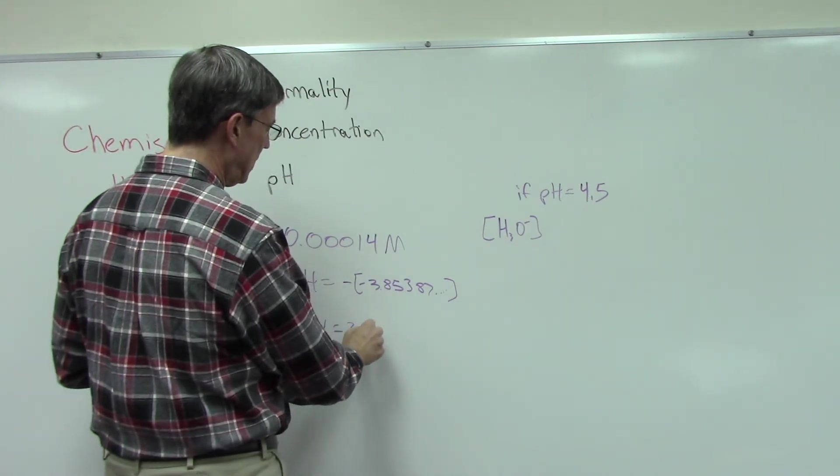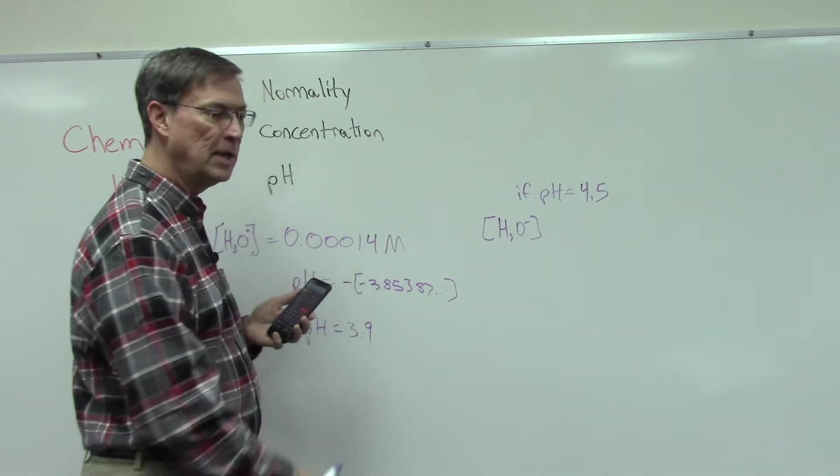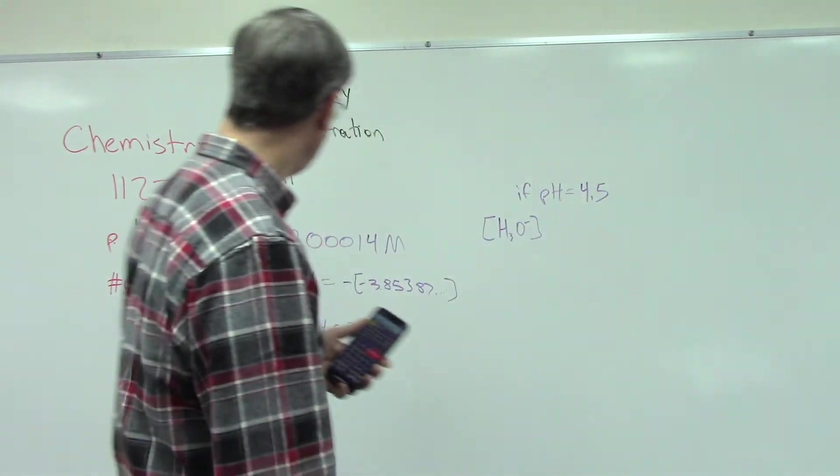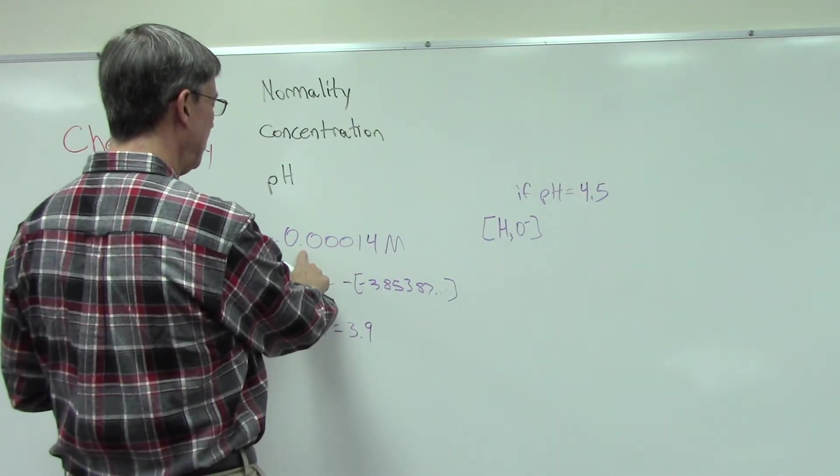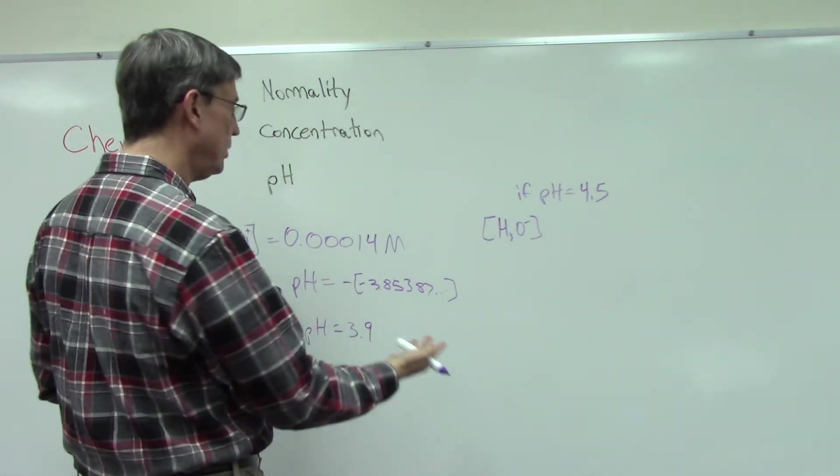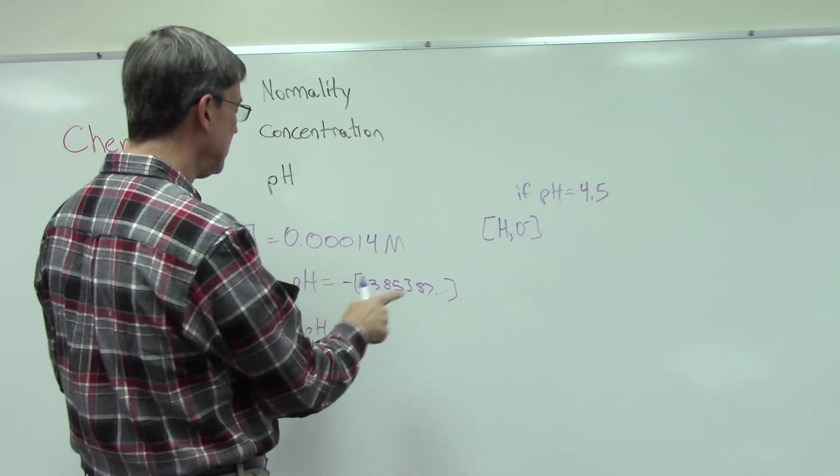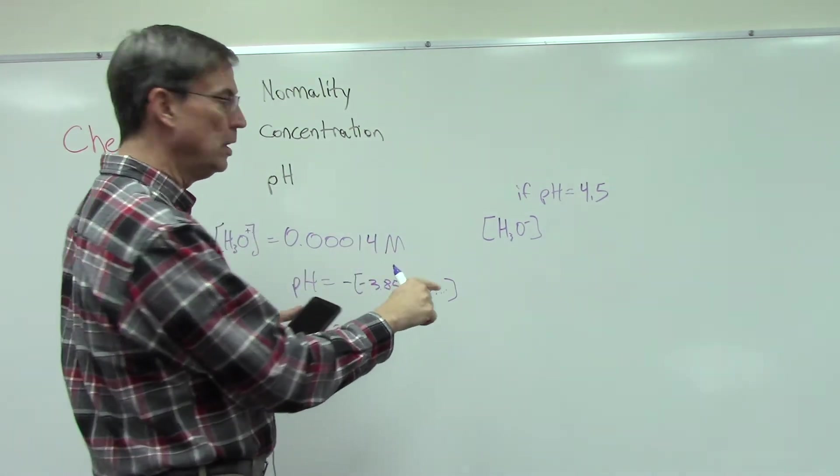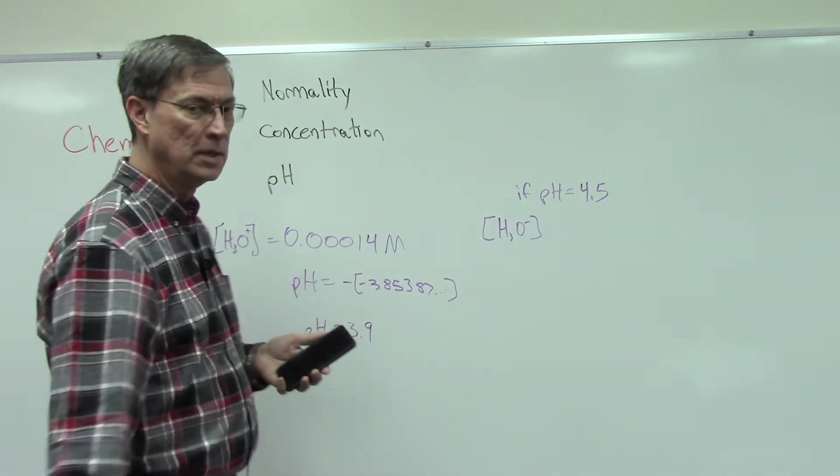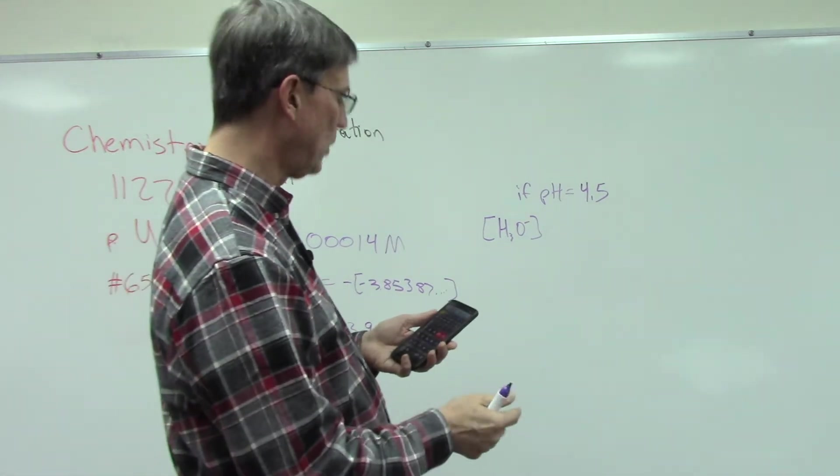Now that's not the answer for number 65. You have a slightly different problem, I think it's 0.000000015, but you can go through the same steps: plug in the decimal number, hit log, then just get rid of the negative sign and round it off to one decimal place.